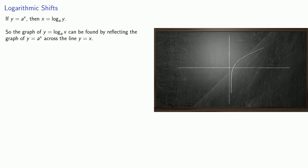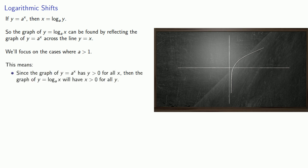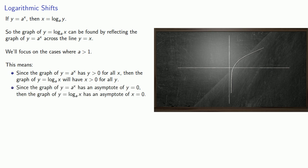We'll focus on the cases where a is greater than 1. This means a couple of important things. Since the graph of y equals a to the power x has y greater than 0 for all x, then the graph of y equals log a of x will have x greater than 0 for all y. And since the graph of y equals a to the power x has asymptote y equals 0, then the graph of y equals log a of x has asymptote x equals 0.